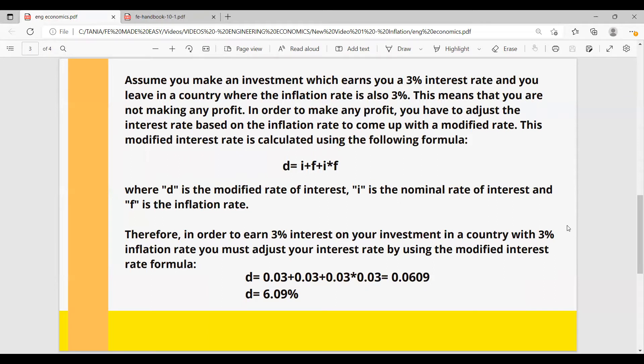D, which is the modified interest rate, equals to interest rate plus inflation rate plus interest rate times inflation. D is the modified rate of interest, I is the nominal rate of interest, and F is the inflation rate.